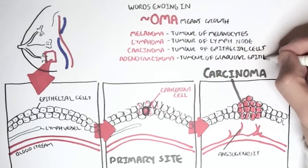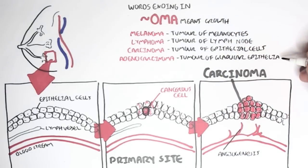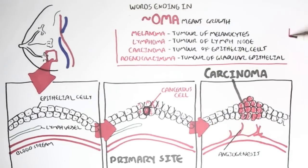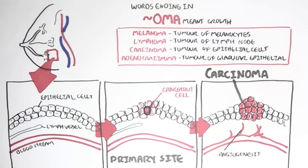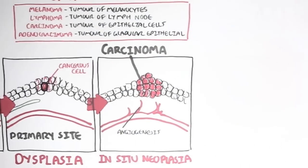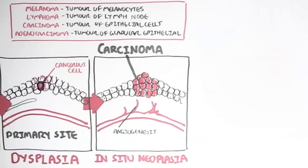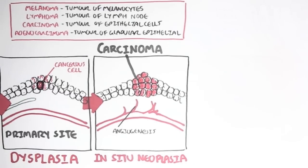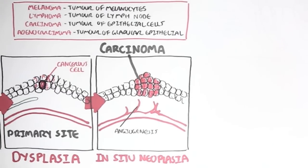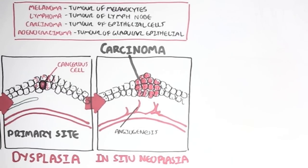Carcinoma means tumor of epithelial cells. And adenocarcinoma, for example, is a tumor of glandular epithelial cells. Seeing that the cells we just looked at are epithelial cells, we can refer to this as carcinoma — so breast carcinoma.